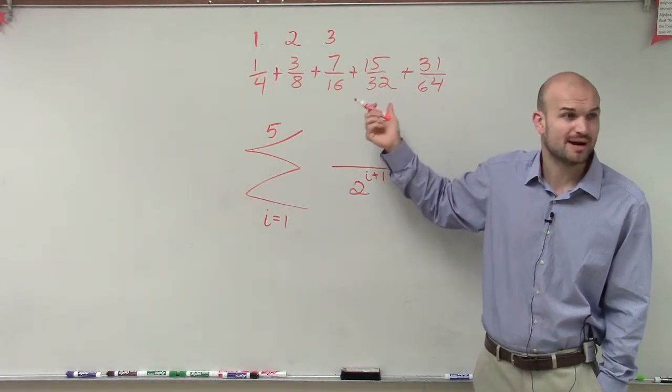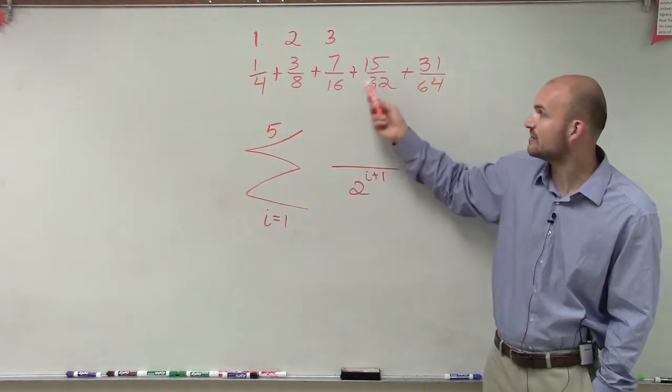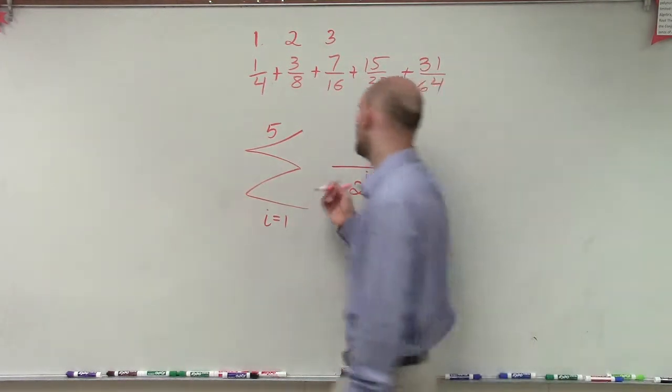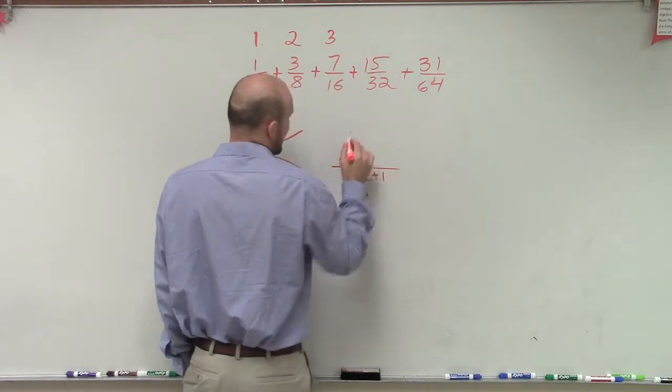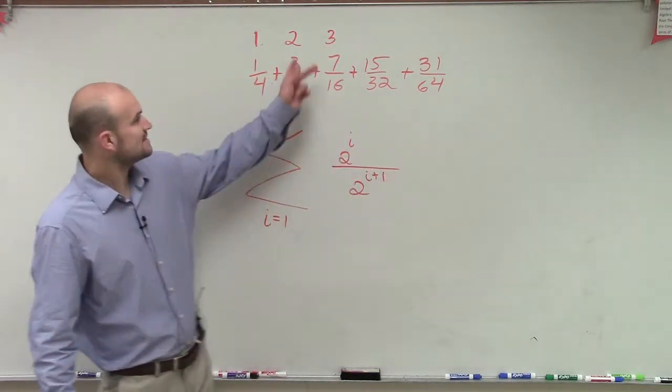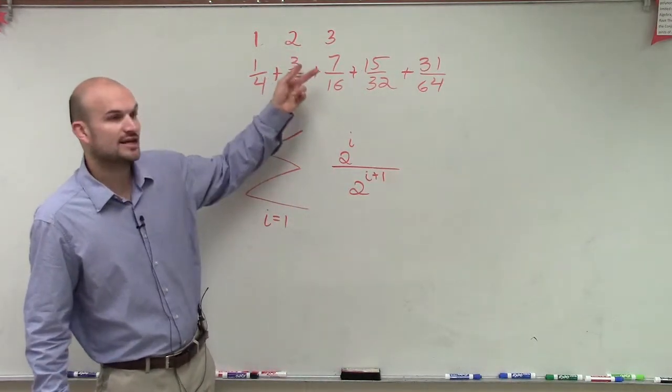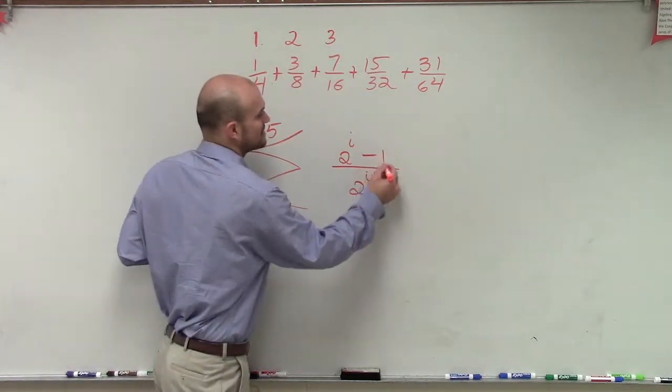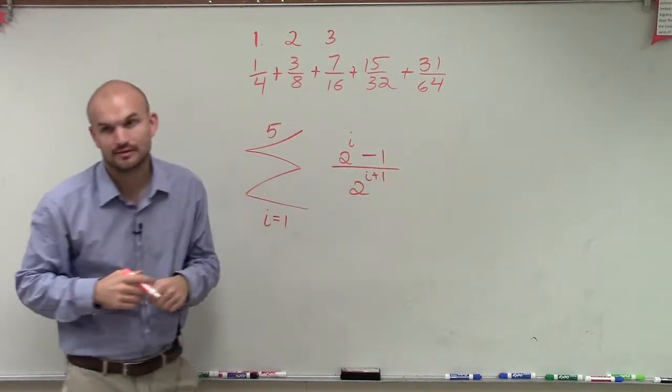They're only subtracted by 1, right? 31 is less than 32. 15 is less than 16. So what we notice is, if I do 2 to the i, so let's say I did 2 squared, that'd give me 4. And then if I subtracted 1, that gives me 3.